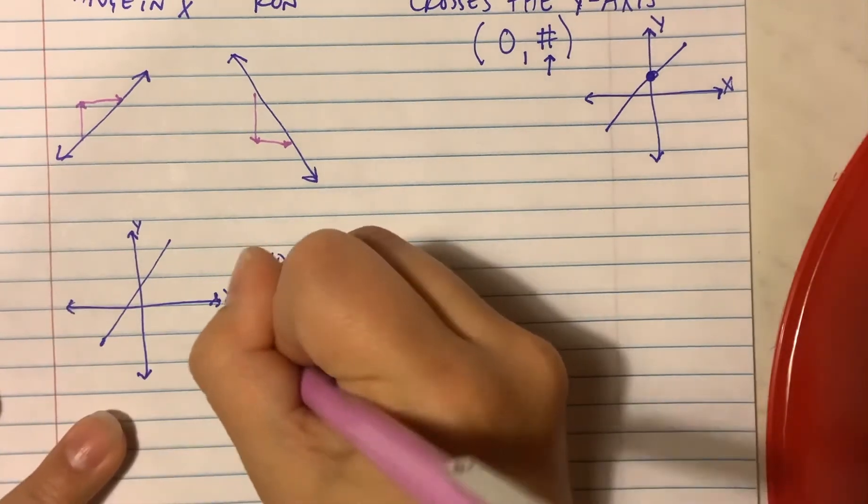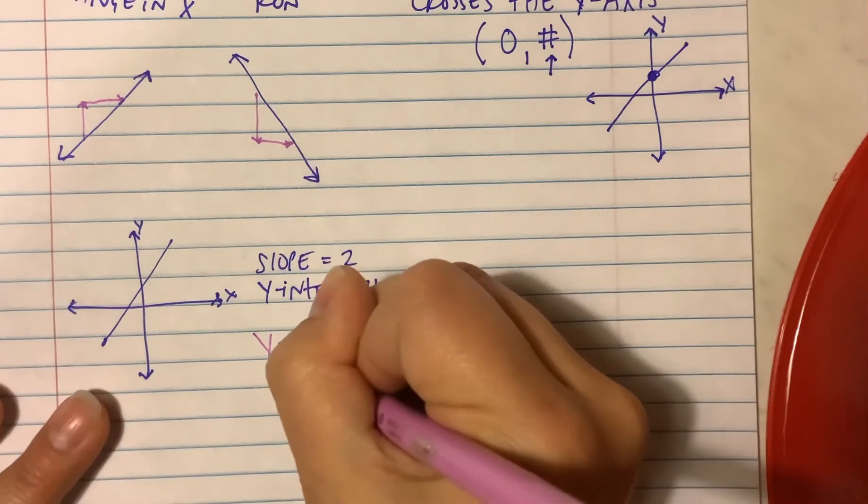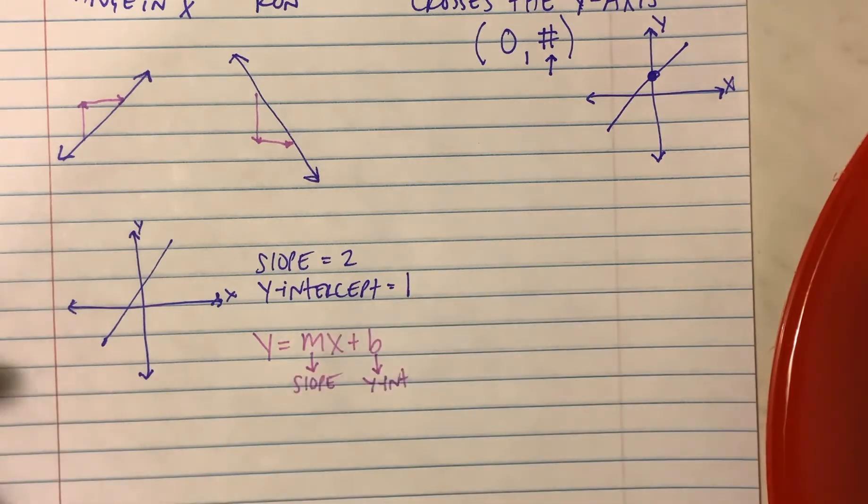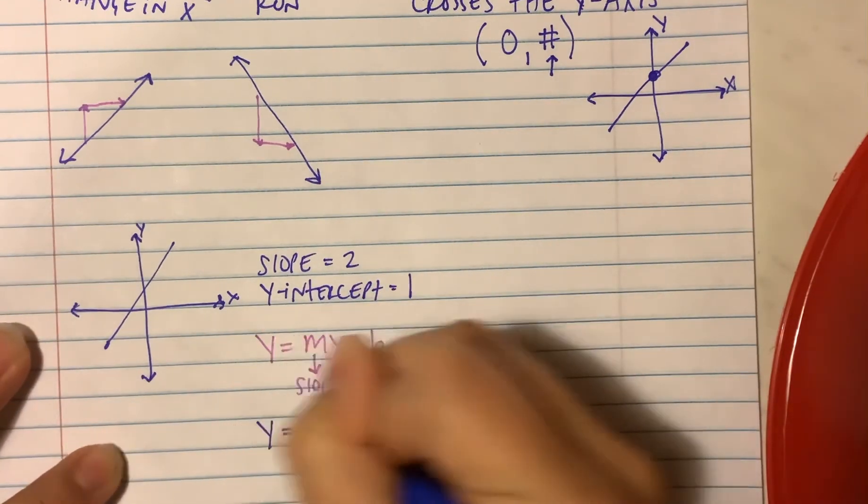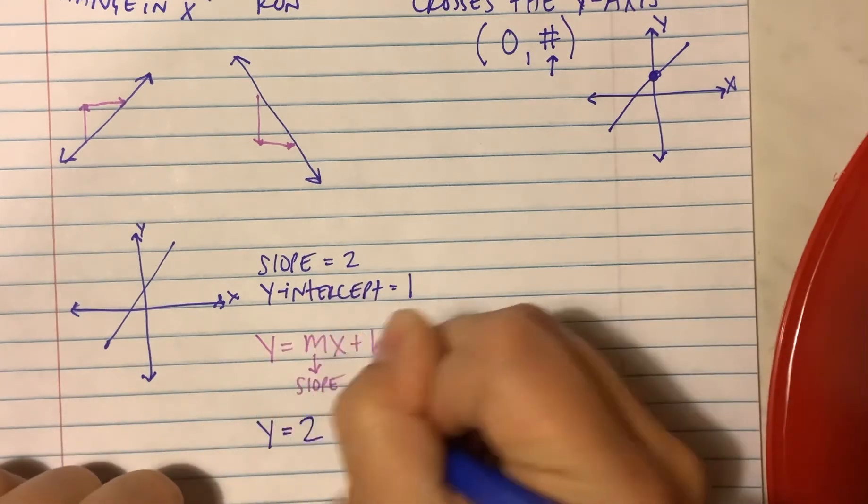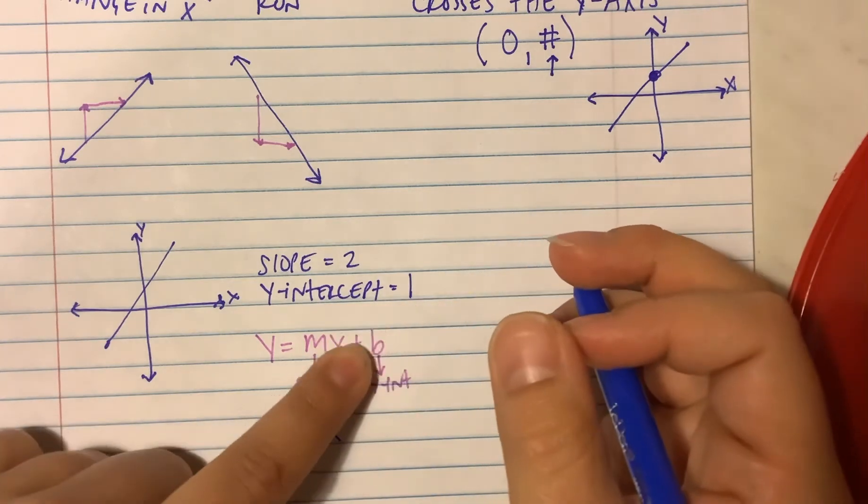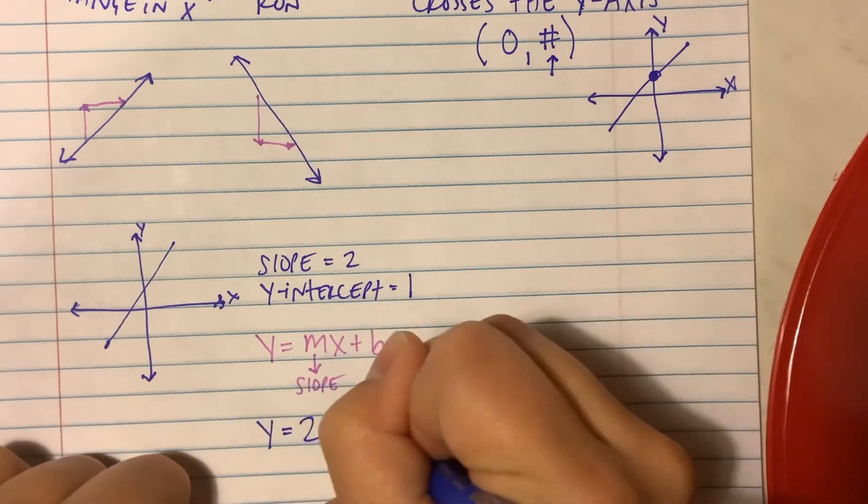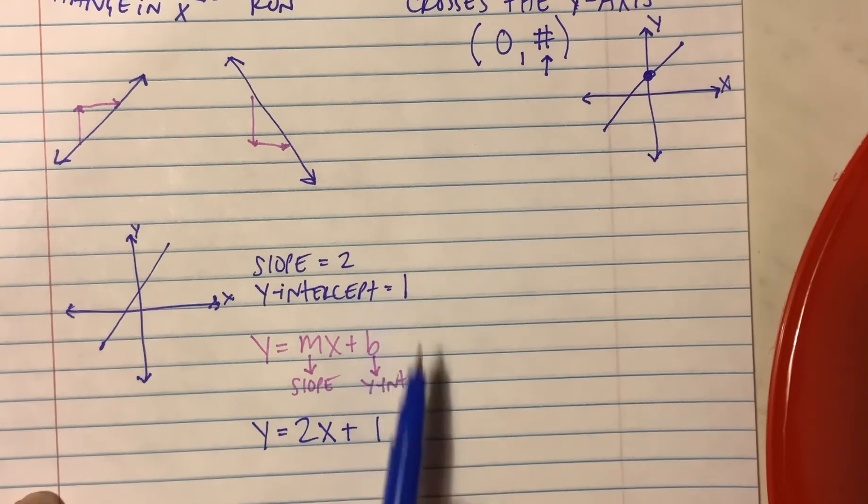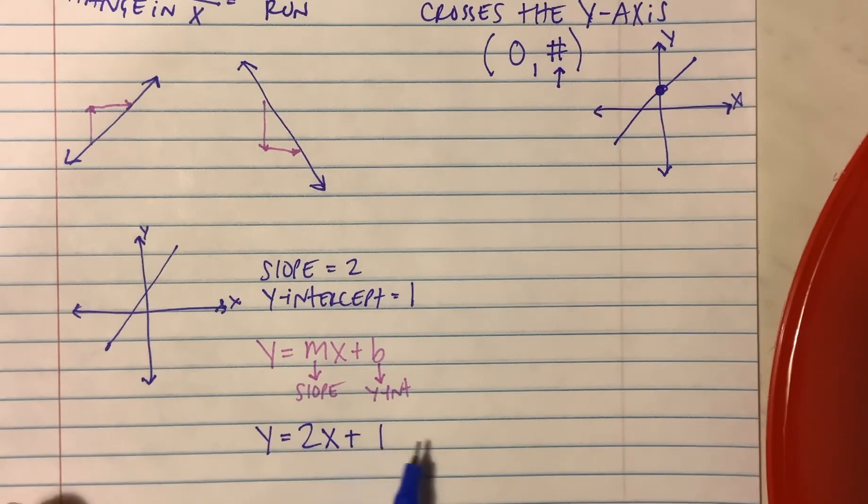remember, I replaced the m with the slope and the b with the y-intercept. So I would replace this m with the 2 and then continue to write the x and the b with the y-intercept, which is 1. So it says plus 1. If your y-intercept is ever negative something, like negative 1 or negative 4 or whatever, you would put minus 1 or minus 4, whatever the number was, we just put minus.